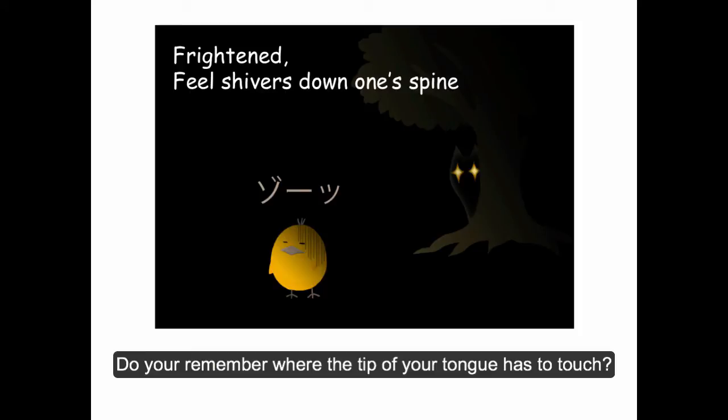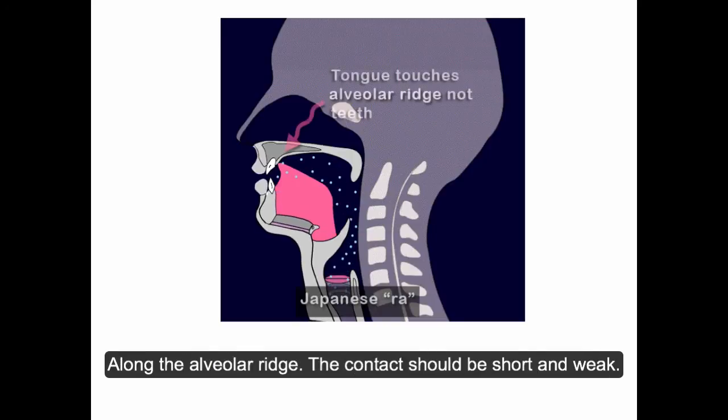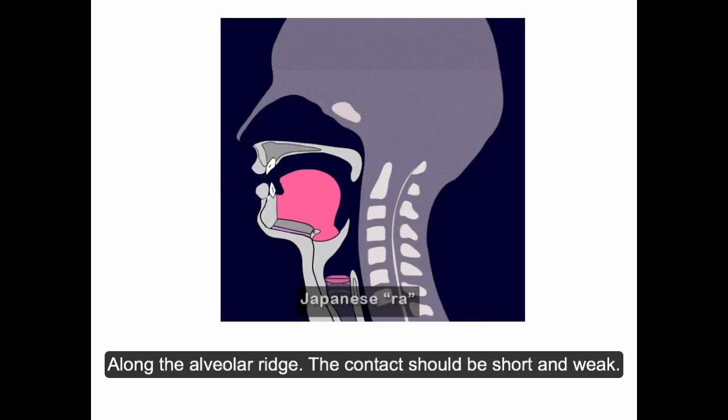Do you remember where the tip of your tongue has to touch? Along the alveolar ridge. The contact should be short and weak.